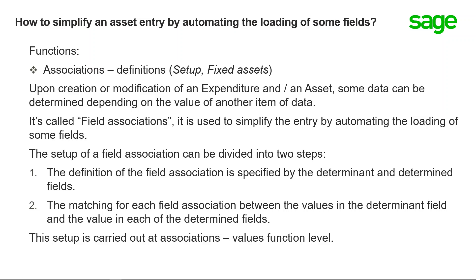The first function we want to focus on is Associations Definitions, located under Setup > Fixed Assets > Associations Definitions. Upon creation or modification of an expenditure or an asset, some data can be determined depending on the value of another item of data. This is called field associations, and it is used to simplify entry by automating the loading of some fields.